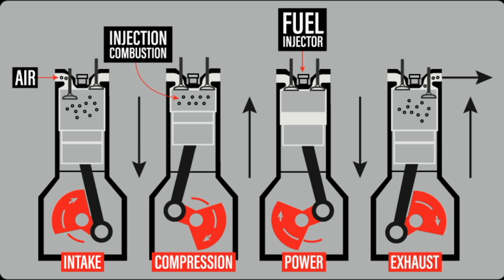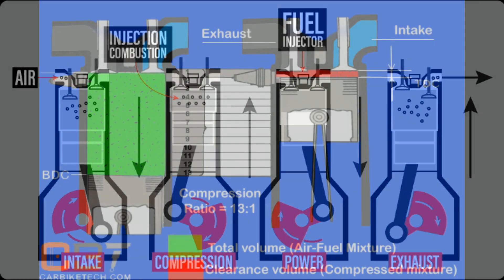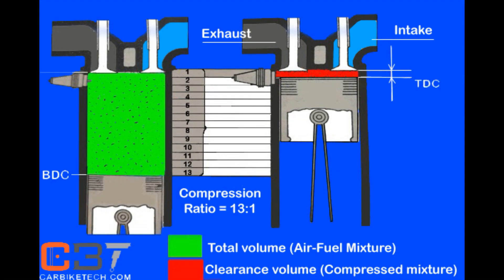For example, let's consider an engine having 1000 cc total volume, out of which 900 cc is the swept volume — that is the volume covered by the piston when it moves from BDC to TDC — and having 100 cc clearance volume, that is the volume left inside the cylinder when the piston reaches its TDC. So the compression ratio of this engine will be 1000 to 100, or 10 to 1.